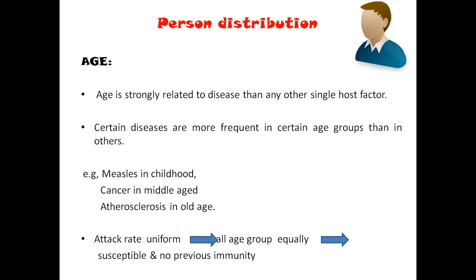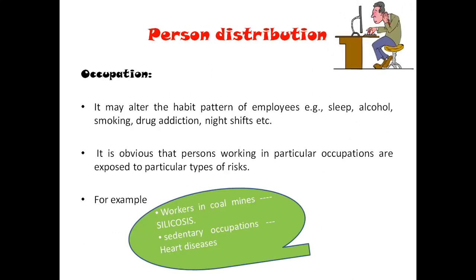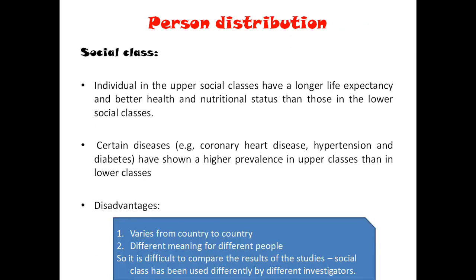Gender-wise, a few diseases are prevalent in males and a few in females. In occupation-related diseases, workers in coal mines usually have silicosis. When we do a study, we need to find out where it is actually prevalent. And for social class — a few diseases are very common in the upper class, while a few are very common in people with a low socioeconomic background.